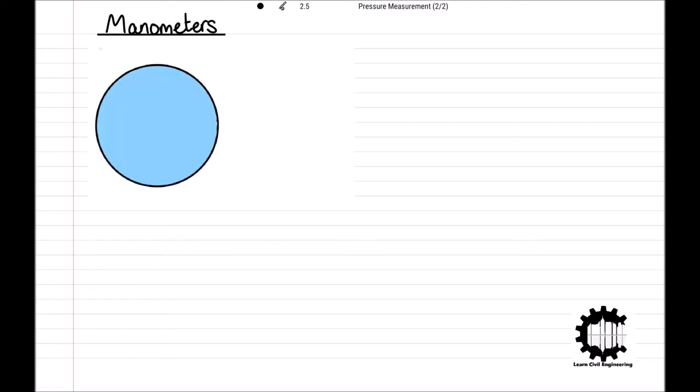Consider the situation shown in the diagram of a pipeline containing a fluid of uniform density rho that is flowing. Note that the fluid can be a liquid or a gas. The diagram shows a cross-sectional view of the pipeline and so the direction of flow is perpendicular to this view, either into or out of the screen.